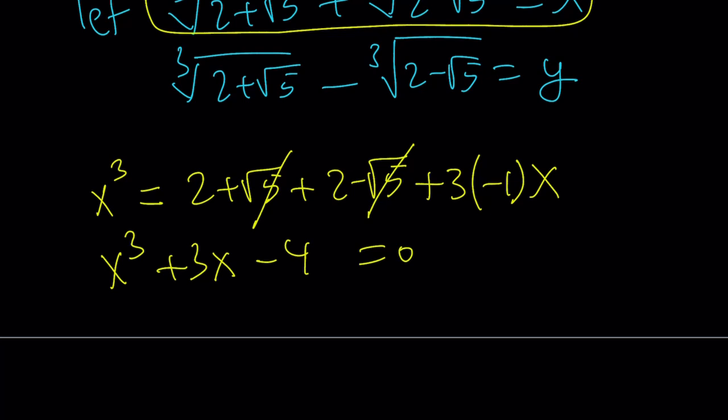We get x cubed plus 3x minus 4 is equal to 0. And hopefully, you immediately realize the sum of the coefficients is 0. Therefore, x equals 1 is a good candidate. And if you divide by x minus 1, you're going to realize the other solutions are complex. In most cases, they're going to be complex.